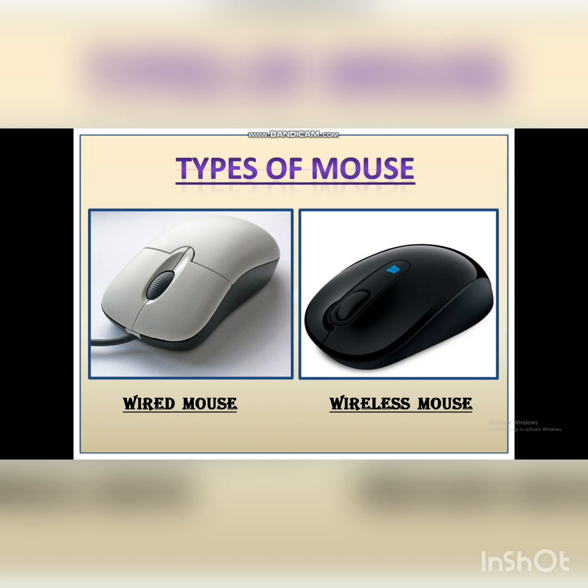Second: Wireless mouse. This mouse also has 2 buttons plus the scroll wheel. The only difference is it doesn't have a wire which is connected to the CPU. It works with the help of the signal which is being given by the CPU.